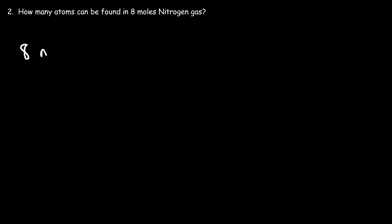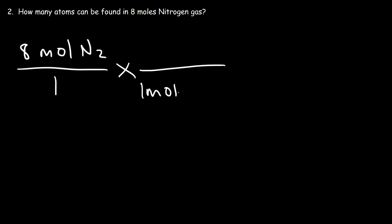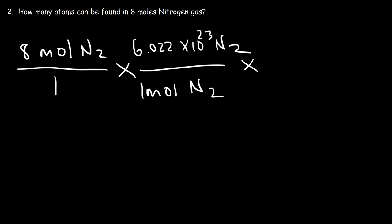Starting with 8 moles of nitrogen — what is the formula of nitrogen gas? It's not simply N, it's N₂. So right now what we have is not an atom but a molecule. We know that one mole is equivalent to 6.022 times 10 to the 23 molecules of N₂. We don't yet have atoms, so we need to take it one step further: in one molecule of N₂ there are two atoms of nitrogen.